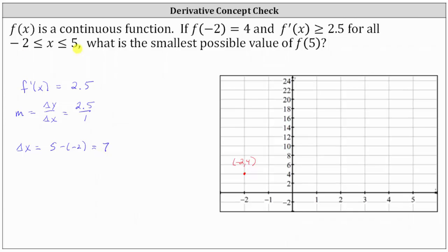And now going back to our slope: a slope of 2.5 over 1 indicates y, or the function value, increases by 2.5 each time x increases by 1. But we know delta x is equal to 7. So to create an equivalent slope where the change in x is 7, we multiply the numerator and denominator by 7. This gives us the equivalent slope of 2.5 times 7, which is 17.5, over 1 times 7, which is 7.